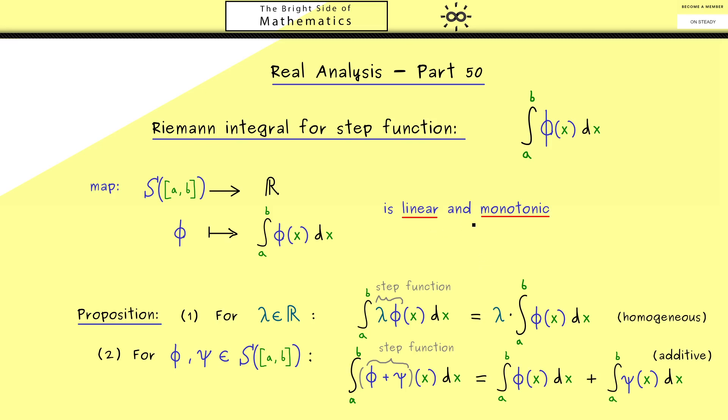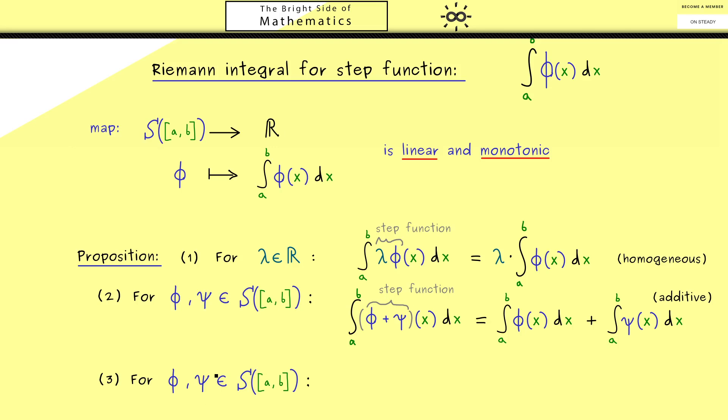The monotonic property is not so complicated and we formulate it again with two step functions φ and ψ. Now we assume that one step function is always above the other one. So ψ is always bigger or equal than φ. This should mean that the orientated area of the rectangles is always larger for ψ. Hence if we sum them up we have the same inequality for the integrals. This order for the functions is conserved for the integrals. Remember, when you increase the function you increase the area as well. This property we call monotonic.